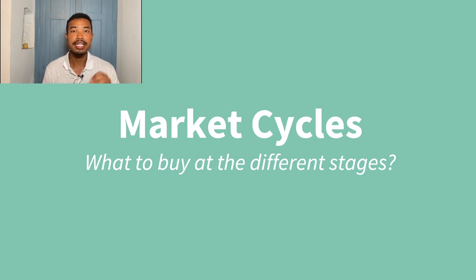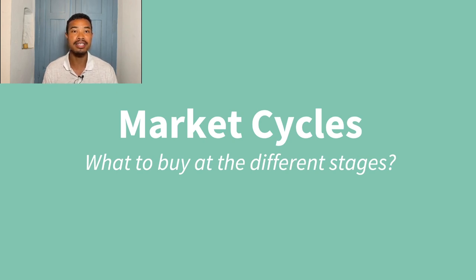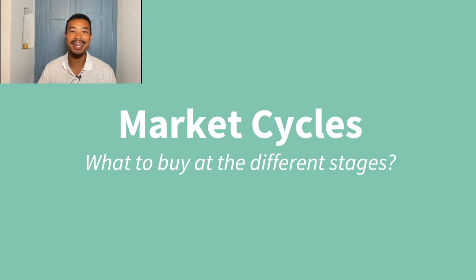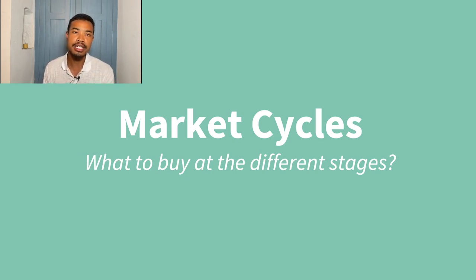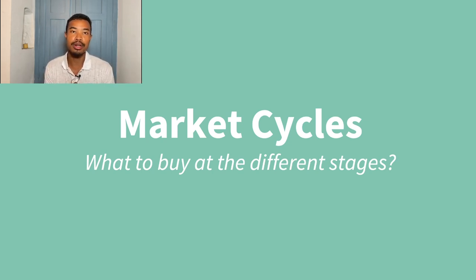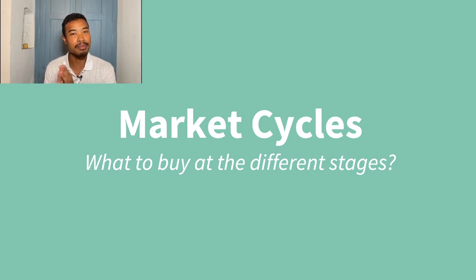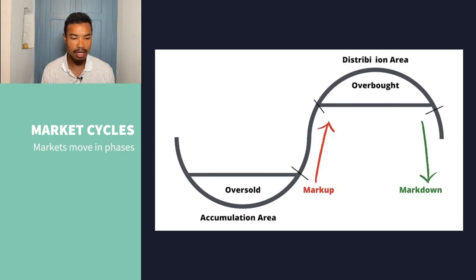Market cycles are a fascinating thing. Today we're going to dive into a framework from the 1970s that gives us an overview of what to buy and sell at different stages of the market cycle. As we know, markets move in cycles — they don't move in a straight linear manner. On a day-to-day basis it can seem like random gyration, but if we can understand where we currently sit in the cycle, this can help to inform our decisions and assumptions about where things may head.